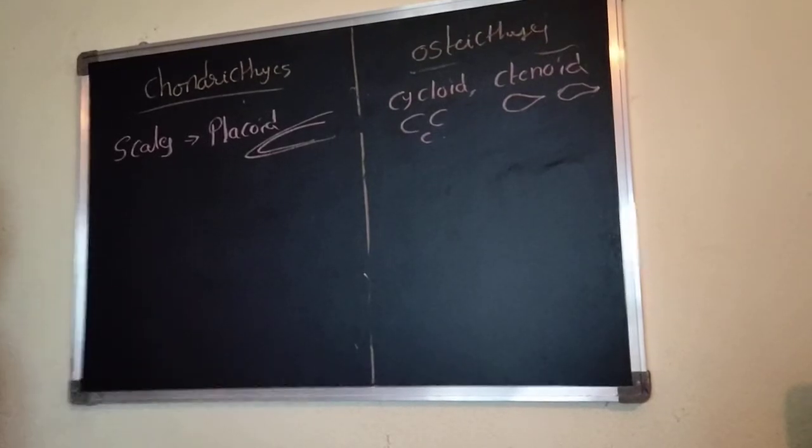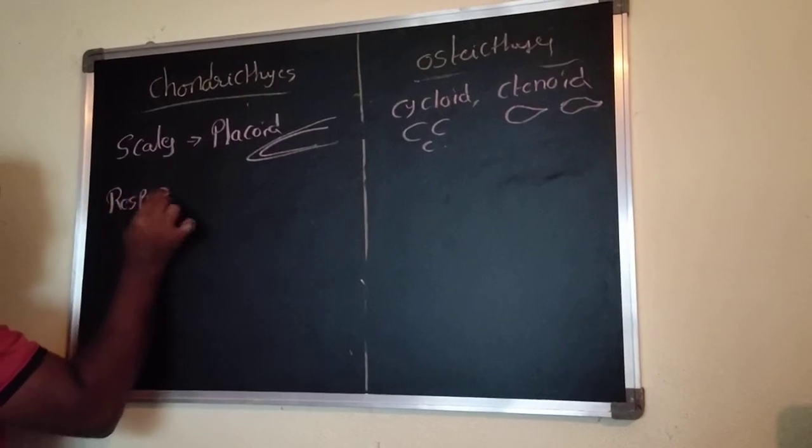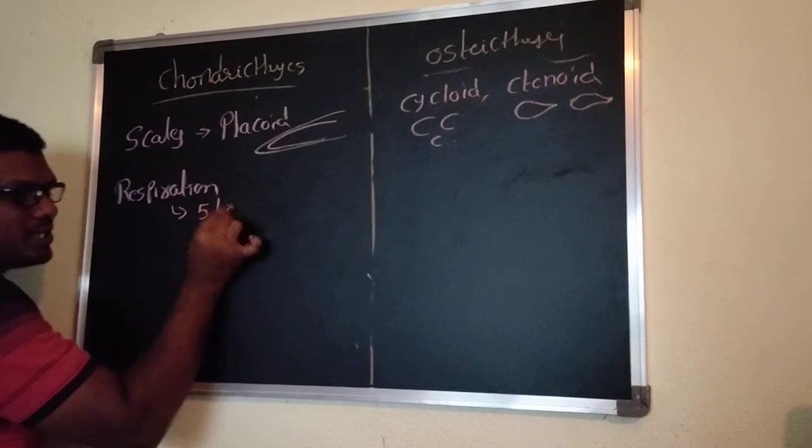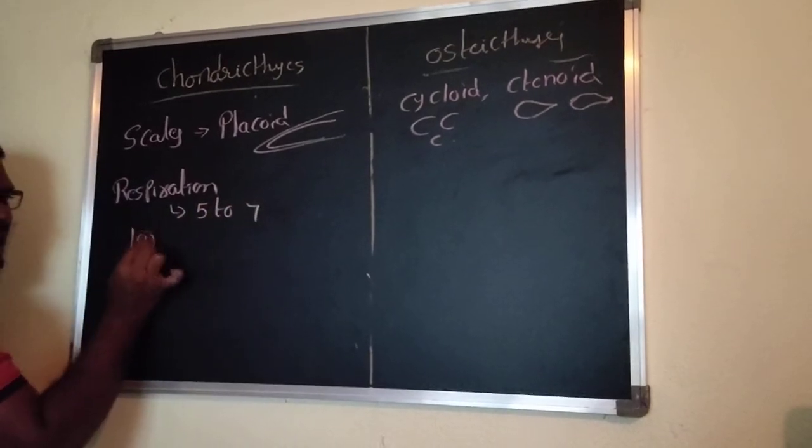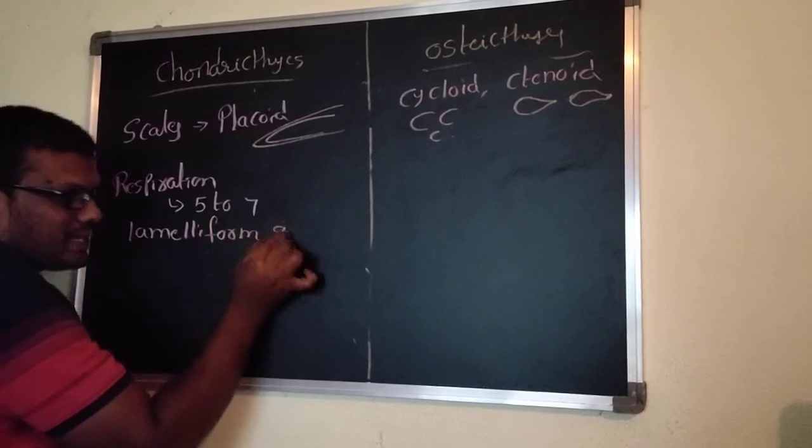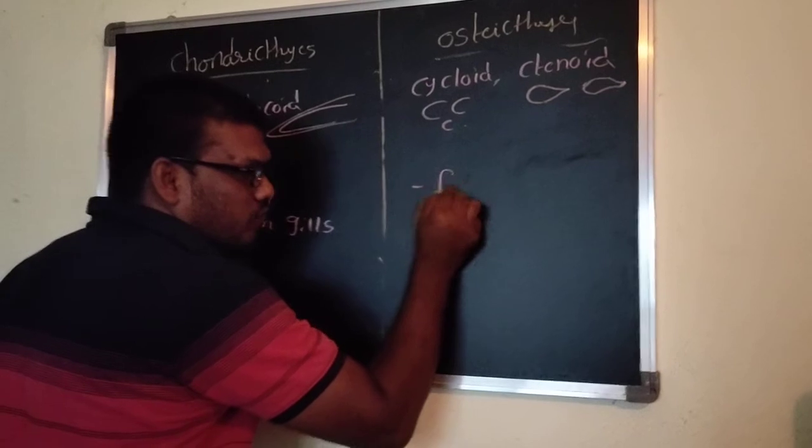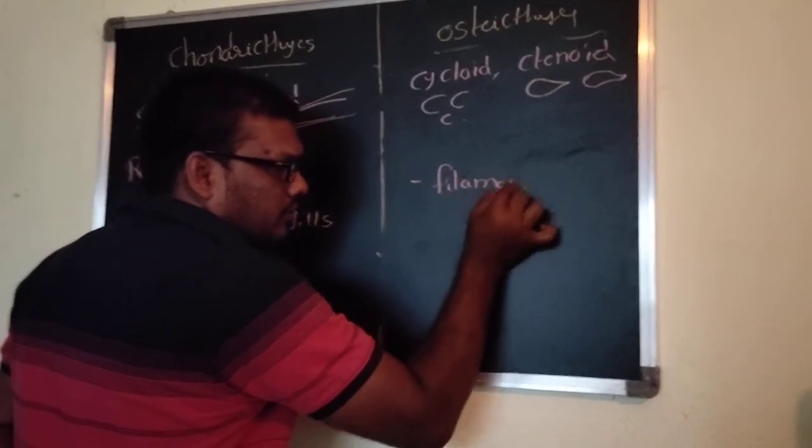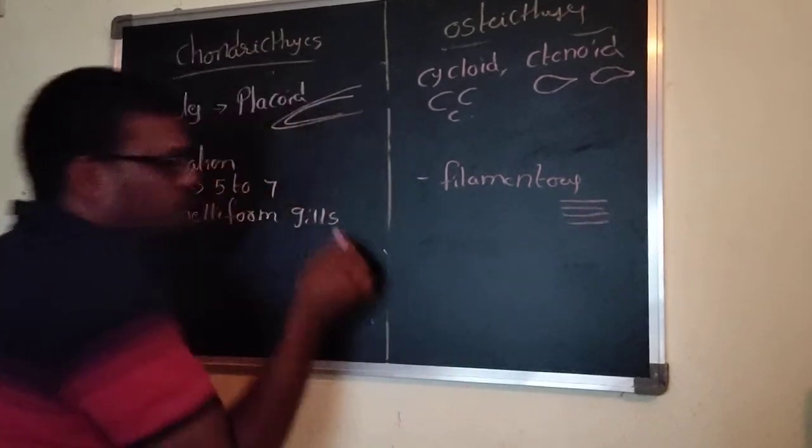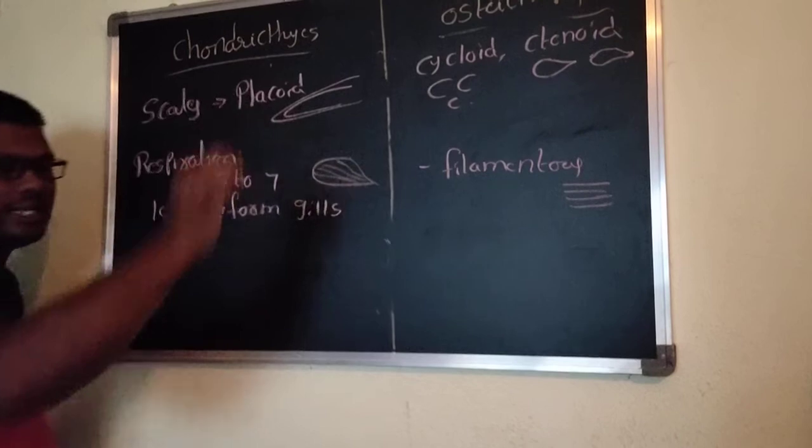If you observe respiration, the respiration takes place through gills. In Chondrichthyes, five to seven lamellar form gills are present. In Osteichthyes, the gills are filamentous form. This is the lamellar form gills compared to filamentous form.